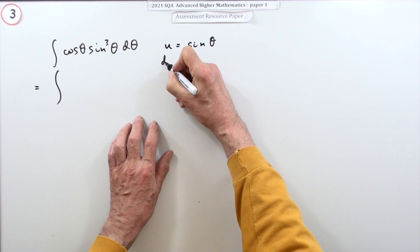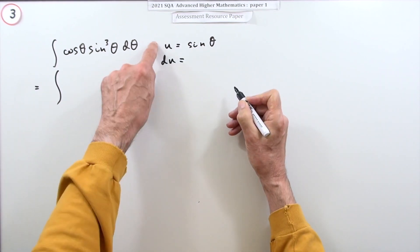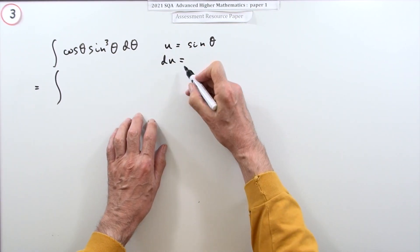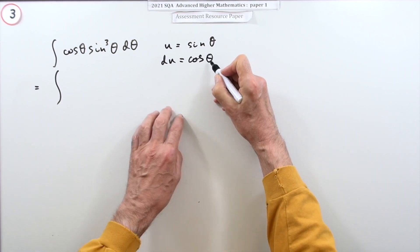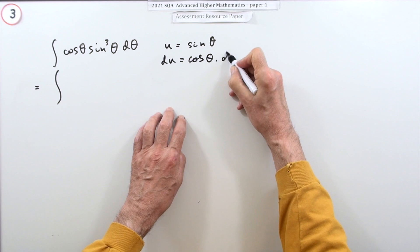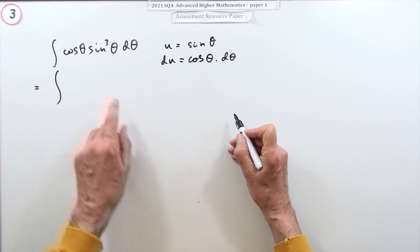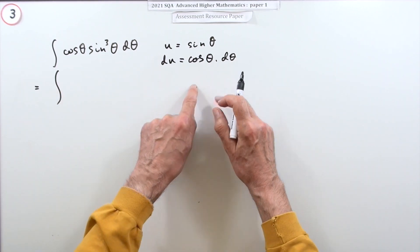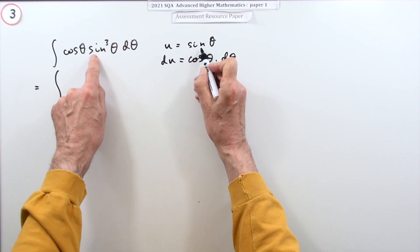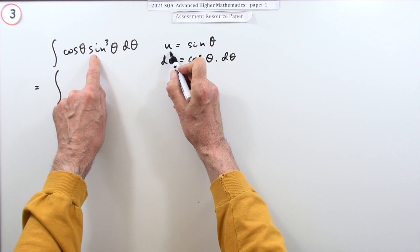The purest way would be to do this: you would say right, du equals—so I'm just working with differentials here—sine goes to cos, so it's cos theta d theta. And then at this point, search for the parts so you can replace them. Look for a sine theta, there's one, so I can replace that with a u.